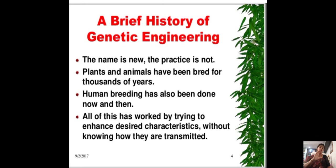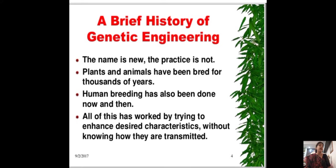Naturally, genetic information is transmitted hereditarily from one generation to the next. The method of insertion of genes to produce desired characters — where the genes in a plant are modified — is known as genetic engineering.